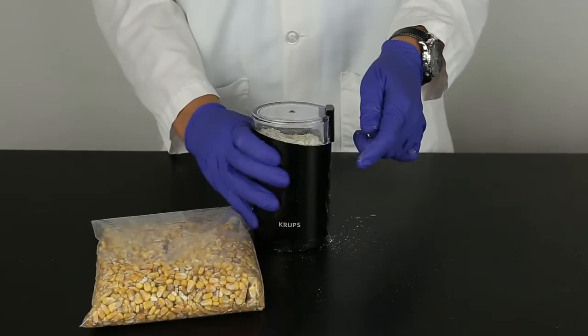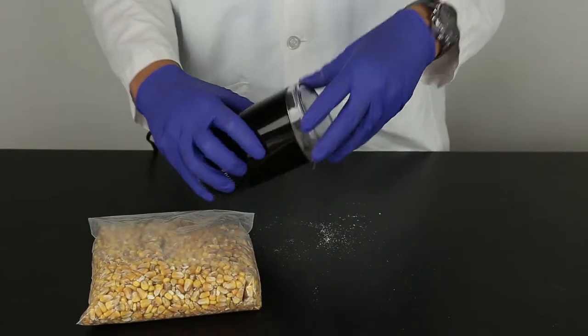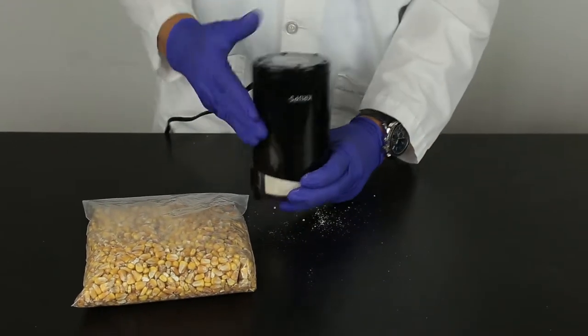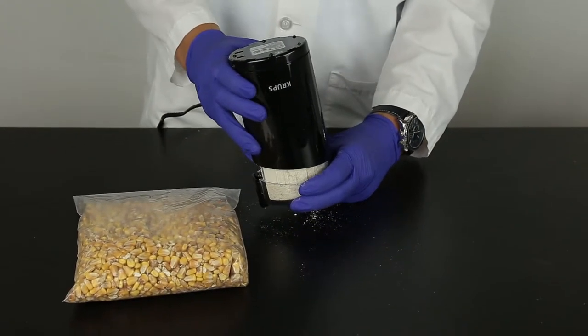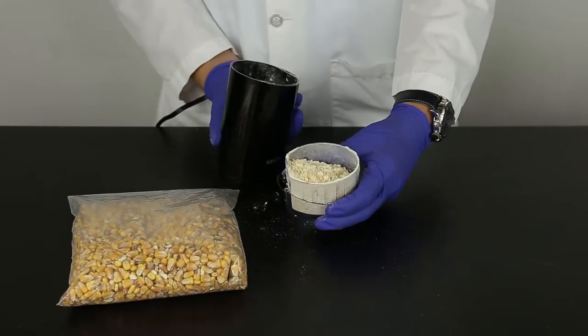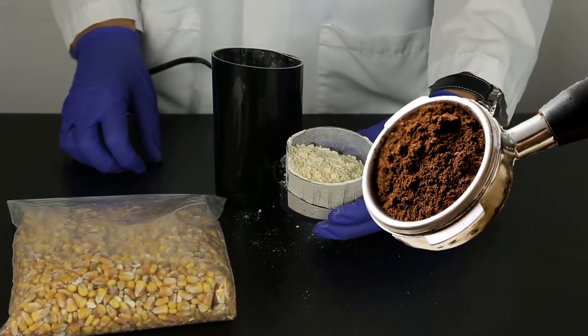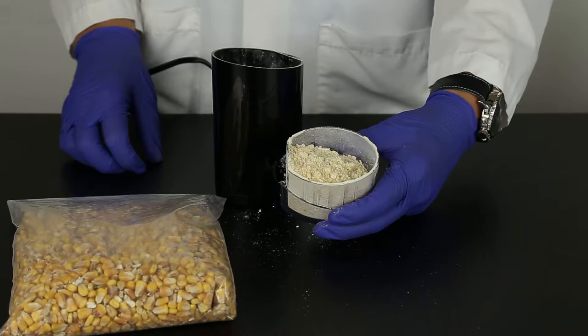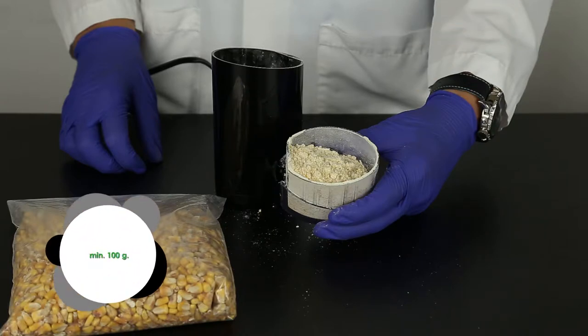Obtain a representative sample and grind so that at least 95% of the ground material passes through a 20 mesh sieve. The particle size should be about the same as espresso. It is best to grind a minimum of 100 grams of your sample.